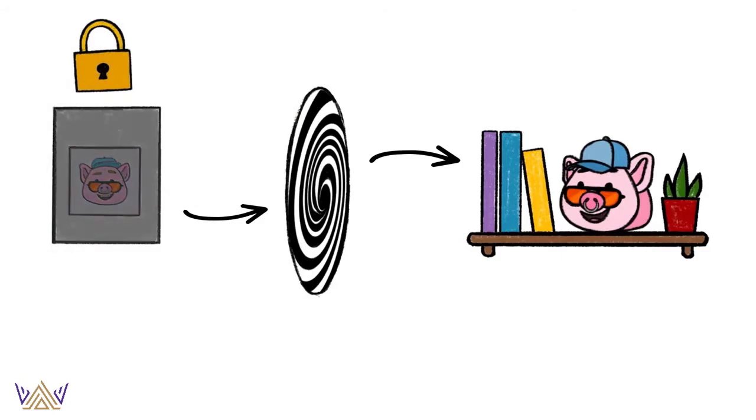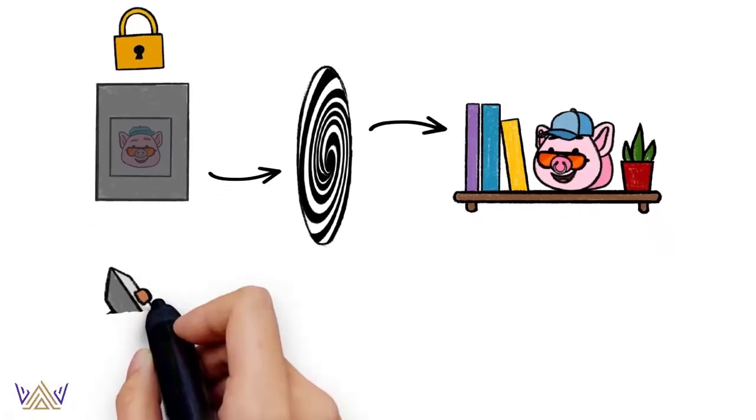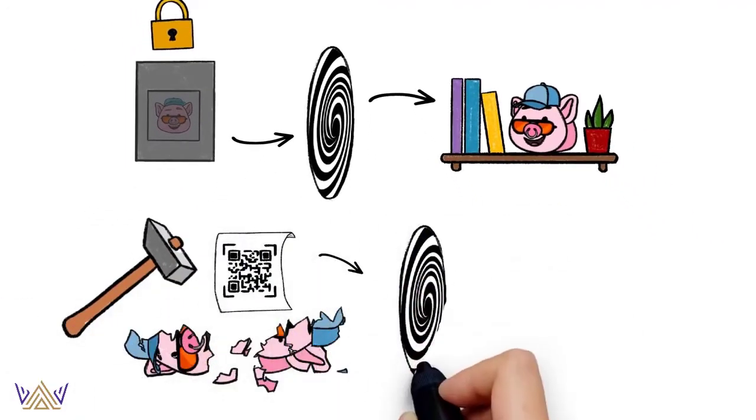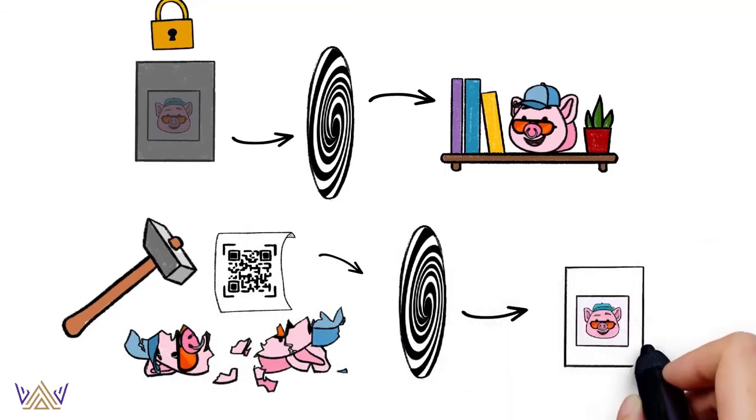The way to reverse this is to break your physical piglet. Inside, you will find a code that will let you unlock your piglet in the blockchain and use it there.